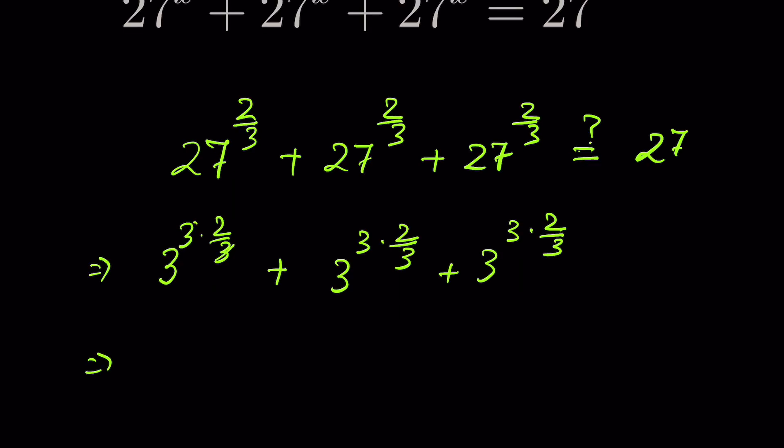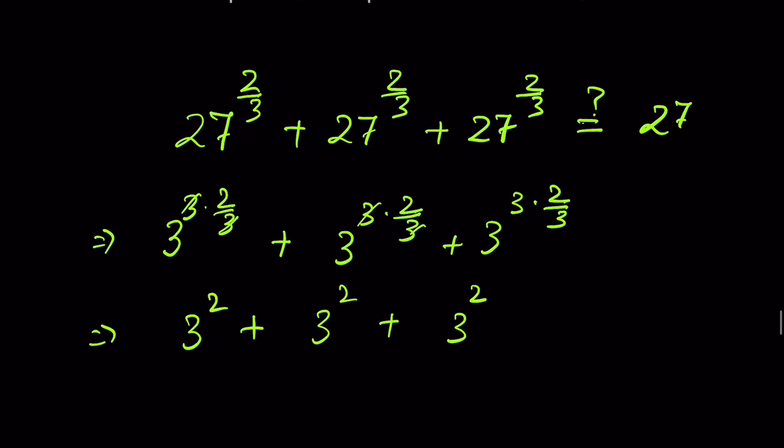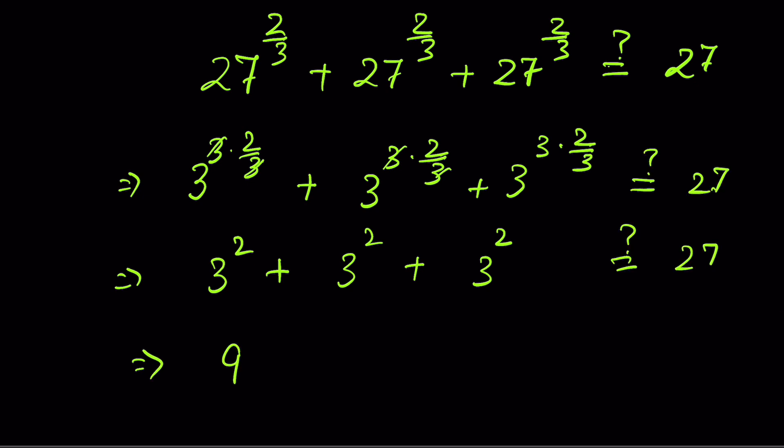This 3 and 3 raised to the power 3, this is 3 squared, plus 3 squared, plus 3 squared. 3 squared is 9, plus 9, plus 9, equal to 27.